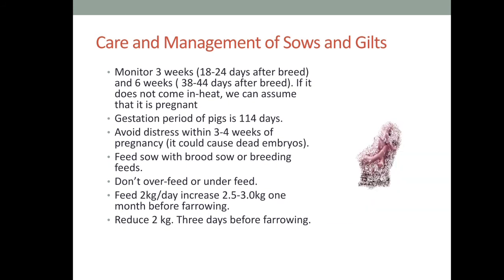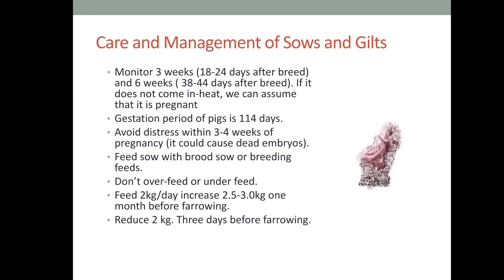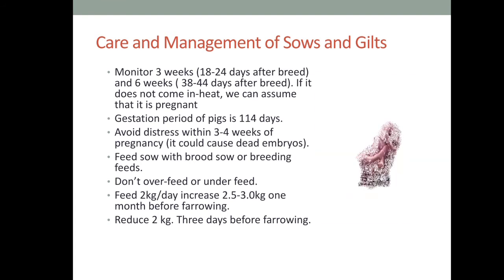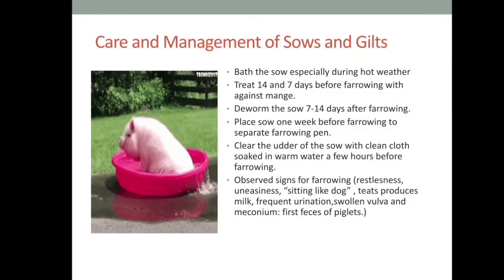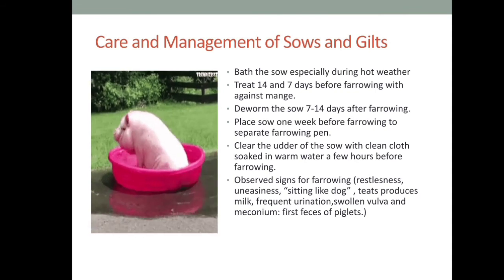Always monitor the sows. Check 3 weeks and 6 weeks — at 18 to 24 days and again at 6 weeks — after breeding. If there are no signs of heat, we can assume the sows are pregnant. The gestation period of pigs is approximately 114 days. Always avoid stress within 3 to 4 weeks of pregnancy, as embryos may die. Feed sows with broad sow or breeding feed. Do not overfeed or underfeed — feed 2 kilograms per day and increase gradually until farrowing. Always bathe or sprinkle sows, especially during hot weather.